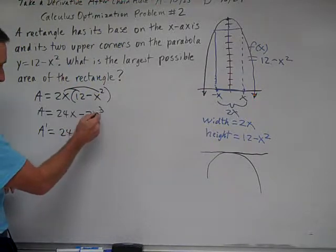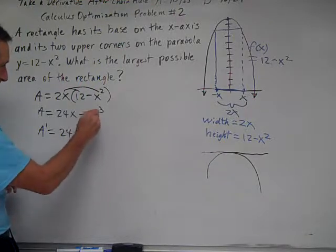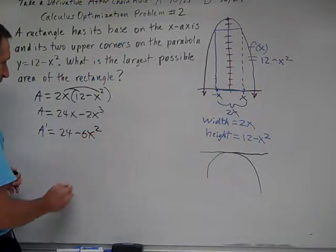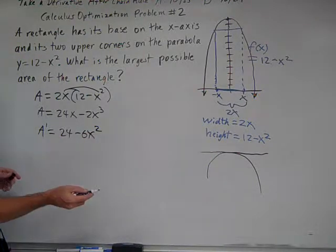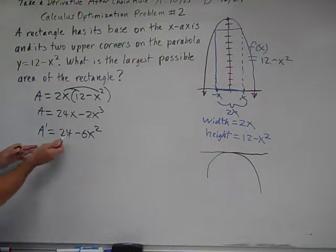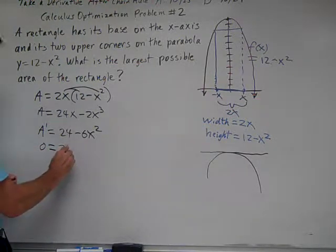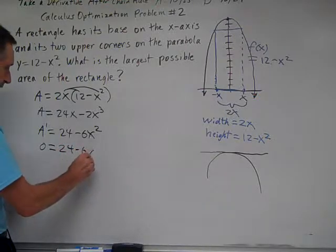And for this second term here, we're going to multiply 3 by the negative 2. So I have negative 6, x to the 3 minus 1 is 2. And the horizontal tangent line is going to be, we'll have a horizontal tangent line where the first derivative is equal to 0. So 0 equals 24 minus 6x squared.